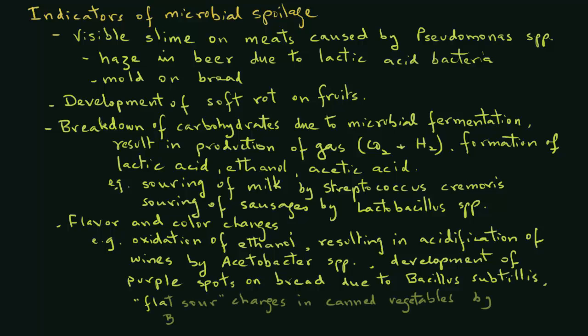And also, flat sour changes in the canned vegetables, which are caused by Bacillus stereothermophilus and Bacillus coagulants. So these changes that occur in food are good indicators of microbial spoilage during storage and distribution.